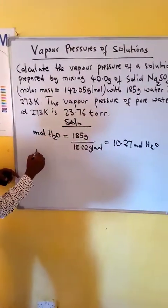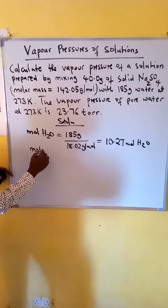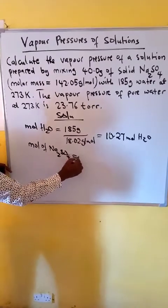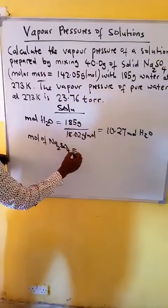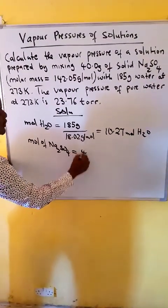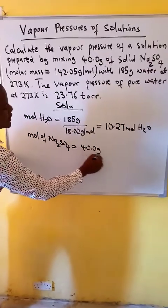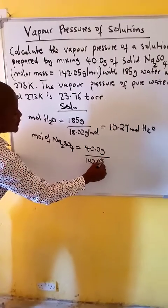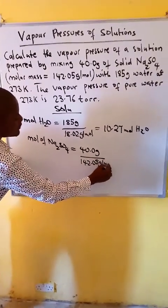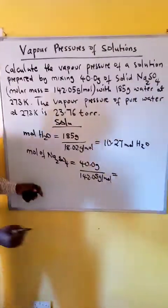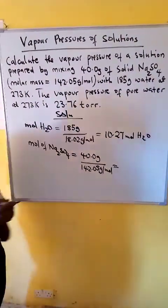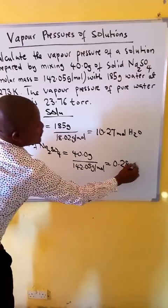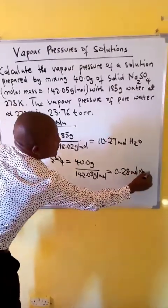Then we calculate the moles of sodium sulfate. The grams of sodium sulfate given is 40.0 grams, with a molar mass of 142.05 grams per mole. When we calculate, we get 0.28 moles of sodium sulfate.